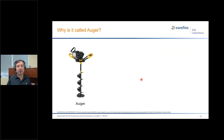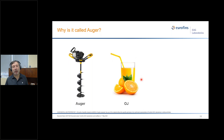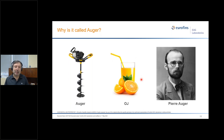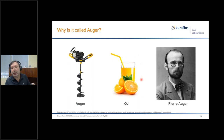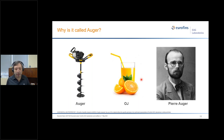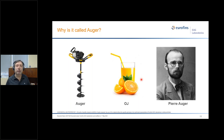Before going into more detail, let's briefly talk about why it's called Auger. It's not named after a drill auger. It's named after Pierre Auger, a French scientist who in the 1920s discovered a three-electron process — now called the Auger process — that the technique is based on. The technique is actually called Auger electron spectroscopy, but it's called Auger for short.